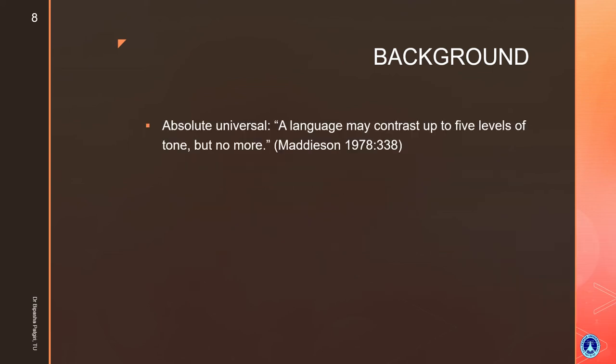There are a few interesting facts to grasp. There is a concept called absolute universal — by the name itself, something absolutely favored or present with no exceptions. For example, 'a language may contrast up to five levels of tone but not more' — a statement given by Ian Maddieson in his 1978 work 'Universals of Tone,' published in Greenberg's book 'Universals in Human Language.'